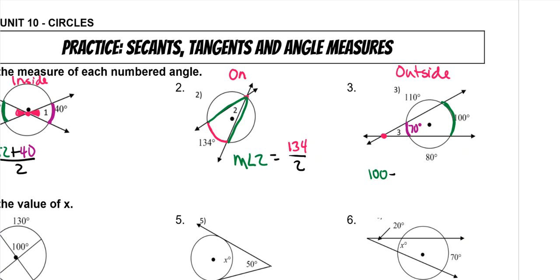So this is actually 70, so minus 70, and then divide by two, and that's how you get the measure of angle three for this one.